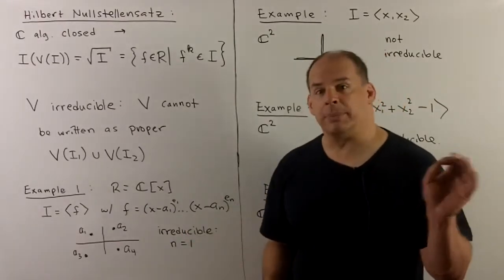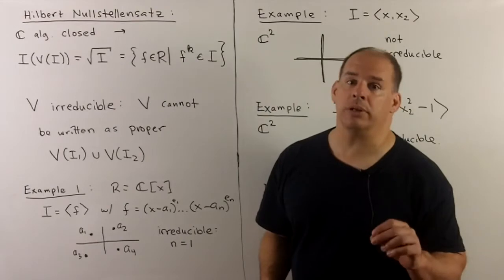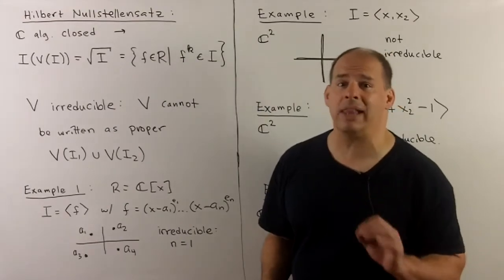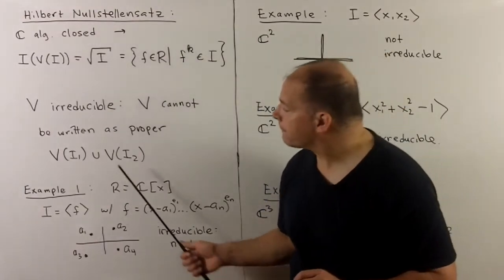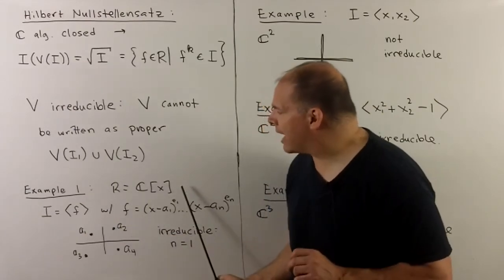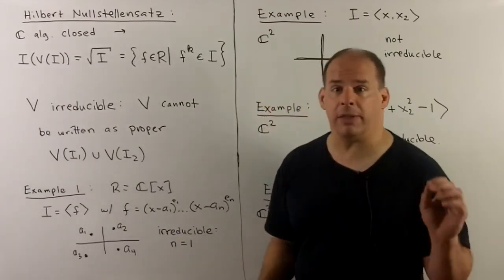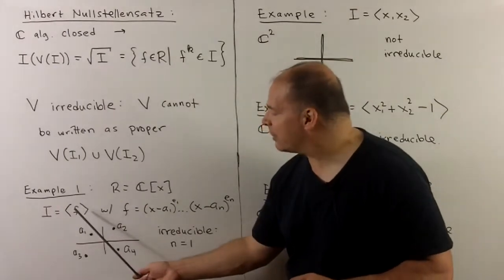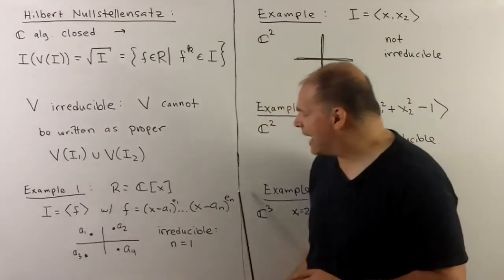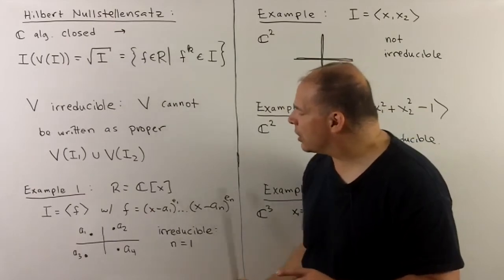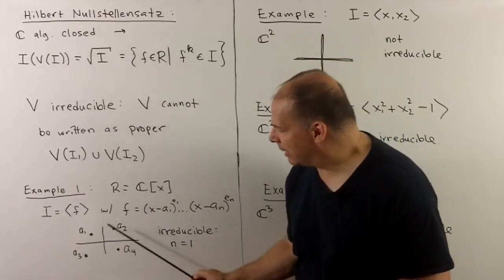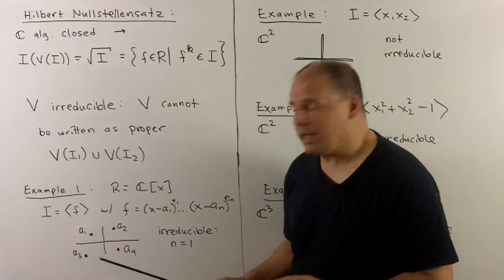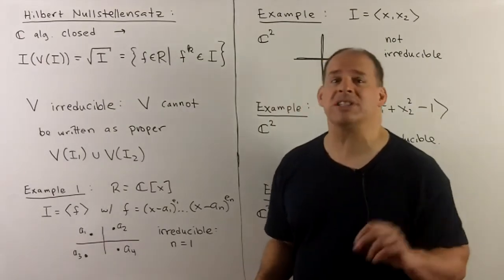Now for some simple examples, because the point of doing torque varieties is to provide a whole class of examples. First, if we're only in one variable over the complex numbers, we have the Fundamental Theorem of Algebra. Take a non-constant polynomial, we have a factorization, and then the zero set is just going to be a collection of finitely many points in the plane. This will be irreducible only if there's a single point.